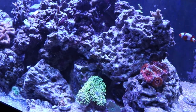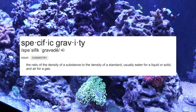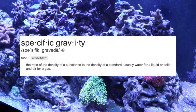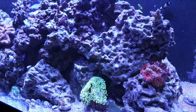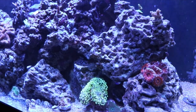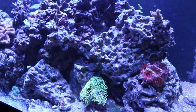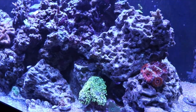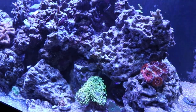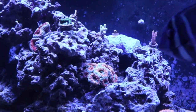Specific gravity is defined as the ratio of the density of a substance to the density of a standard — usually water for a liquid or solid, and air for a gas. To make specific gravity a little more confusing, the density of the liquid, which is water when measuring the specific gravity of a saltwater aquarium, will change with the temperature of the water. When water is warm it expands; when water is cool it contracts, so the density of that liquid is going to change with the temperature.